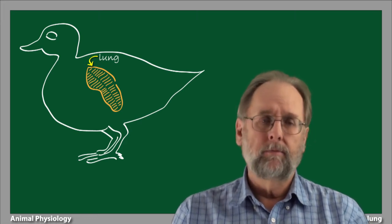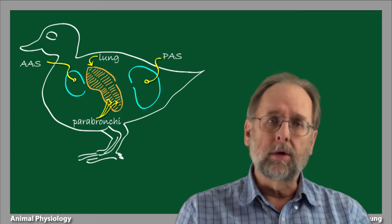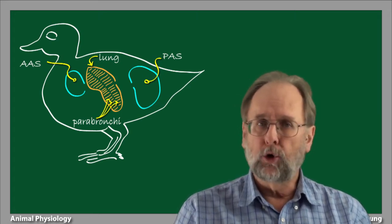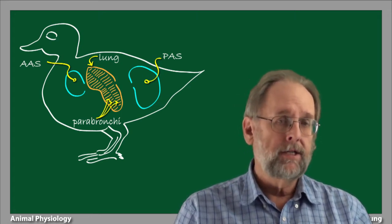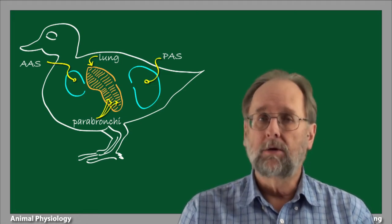Let's refresh our memory of the basic lay of the land. Here's a silhouette of a bird, and the lung is contained about mid-body. The bird's lung is permeated by a closely packed set of parallel airways known as the parabronchi. The lung is also surrounded by a system of air sacs. For our purposes, we can lump the air sacs of the bird into two major categories: the anterior air sacs, or AAS, and the posterior air sacs, or PAS.